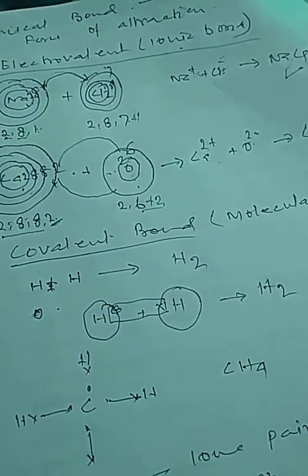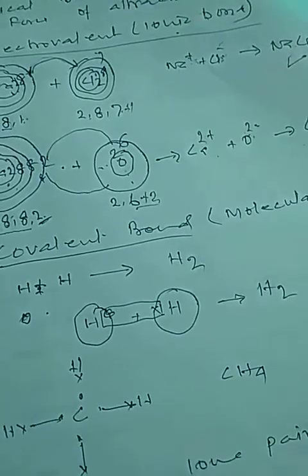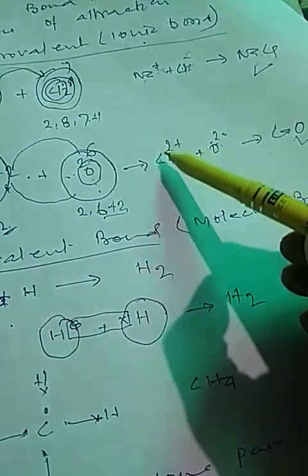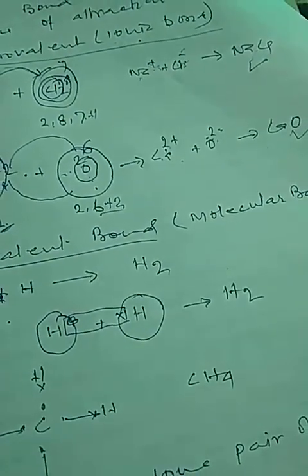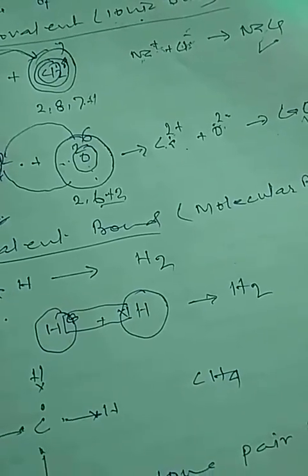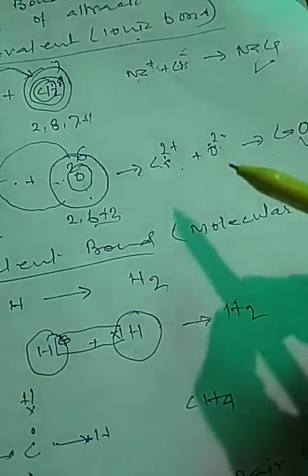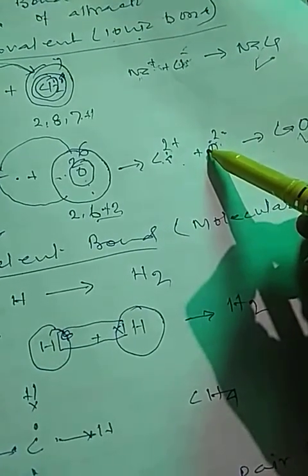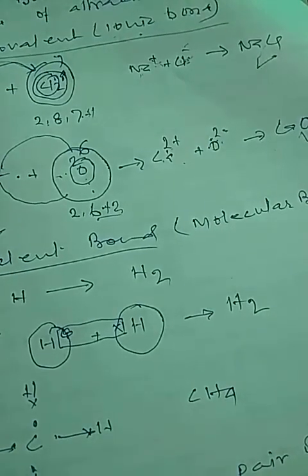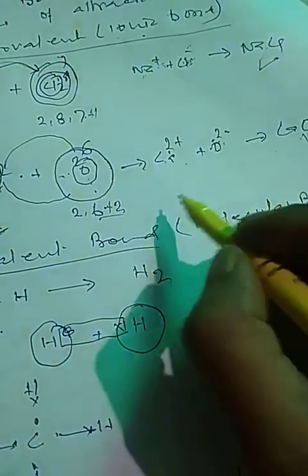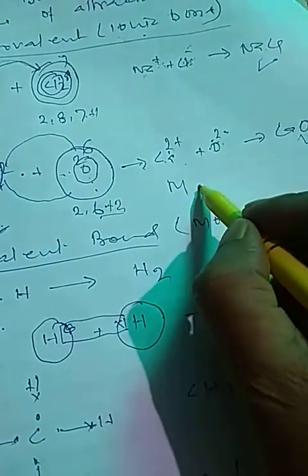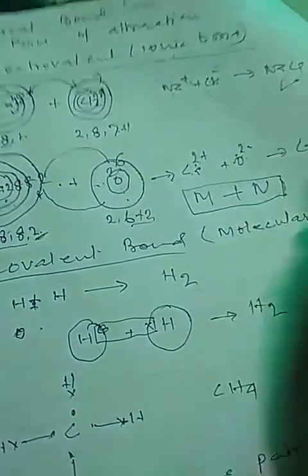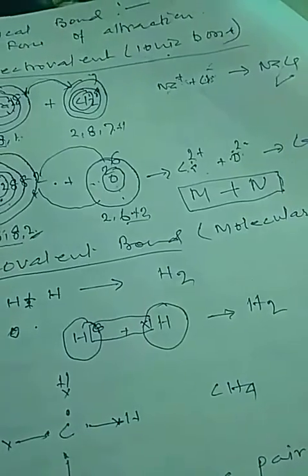My dear students, this ionic bond is formed between two opposite ions. How are these ions formed? By losing of electrons. And who loses electrons? Metals lose electrons. And how does an element become a negative ion? By gaining of electrons. Which element gains electrons? Non-metals gain electrons. That means this bond is formed between a metal and a non-metal. Ionic bond is always formed between a metal and a non-metal.